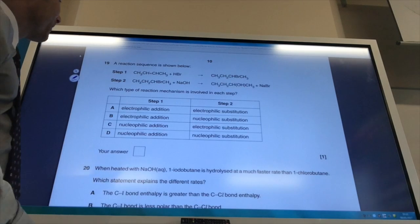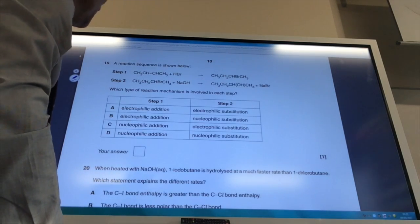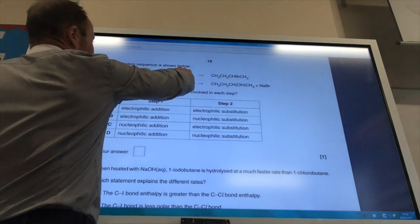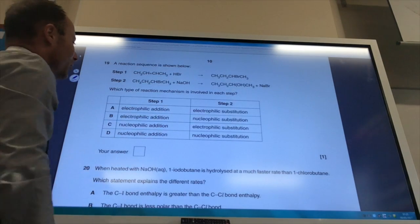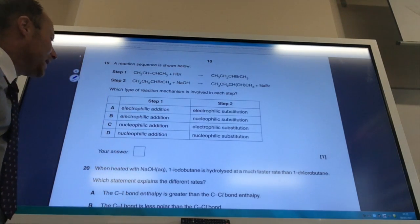For this one, they want me to identify the reaction mechanism. For step one, I've got HBr adding across a double bond. That is electrophilic addition, so it's either A or B.